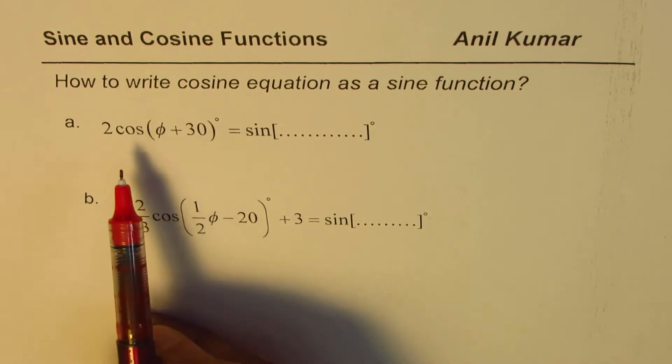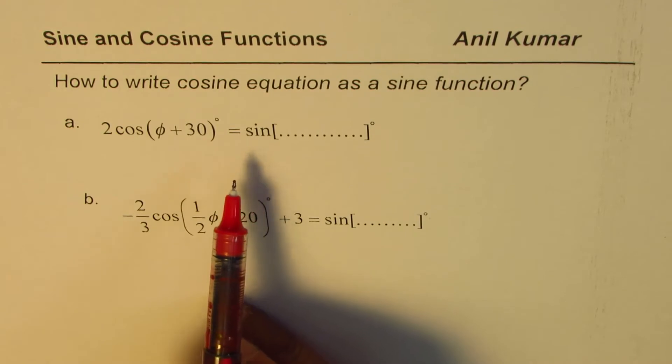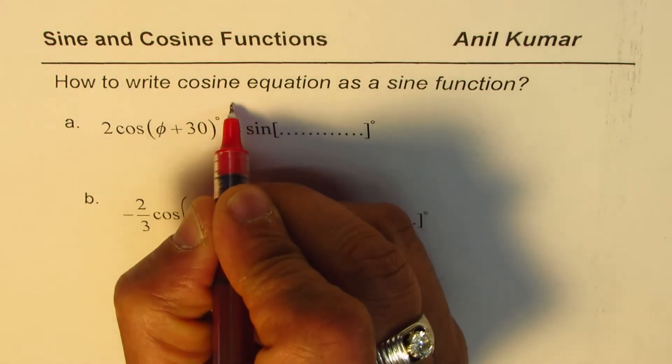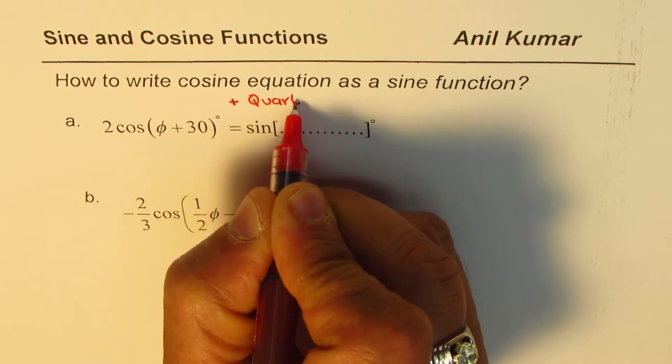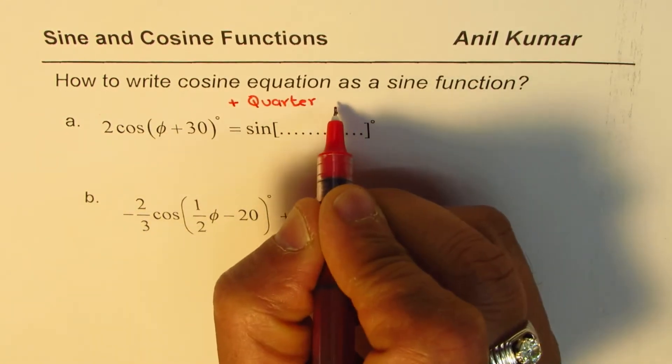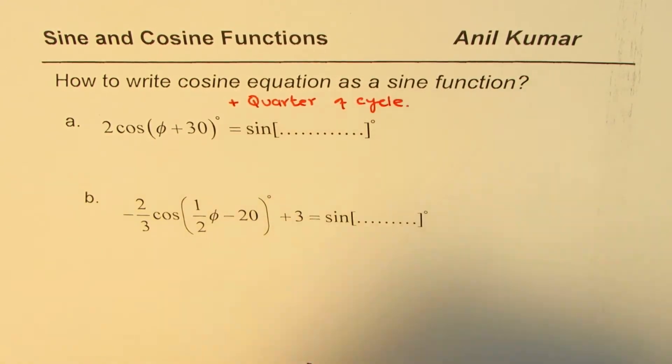To write cosine as sine what we need to do is add quarter of the cycle. That is what we need to do, to add quarter of cycle. In that case the cosine becomes sine.